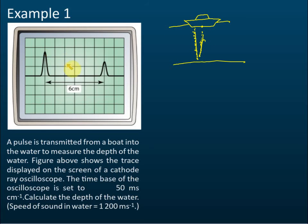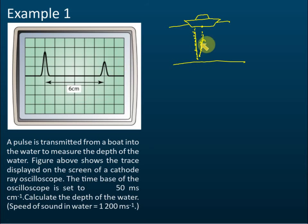A cathode ray oscilloscope shows the pulses. The first pulse appears when the sound is emitted, and the second pulse appears when the reflected sound is detected. The first pulse has a higher amplitude, and the second pulse has a lower amplitude, because the pulse loses energy as it travels down and reflects back.